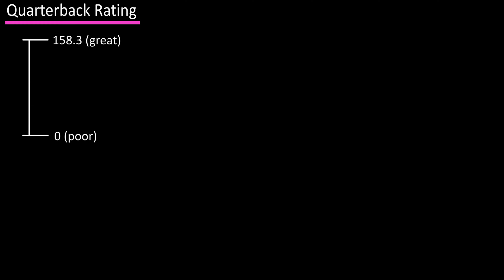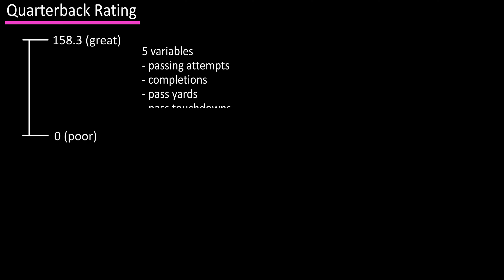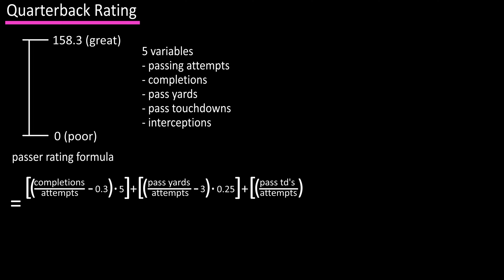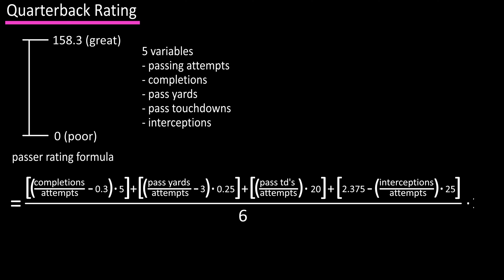Passer rating in the NFL is on a scale from 0 to 158.3, and the five variables it looks at are passing attempts, completions, passing yards, passing touchdowns, and interceptions thrown. The formula for passer rating equals: the quantity completions divided by attempts minus 0.3 times 5, plus the quantity passing yards divided by attempts minus 3 times 0.25, plus the quantity passing touchdowns divided by attempts times 20, plus the quantity 2.375 minus interceptions divided by attempts times 25. Take that result and divide it by 6, then multiply by 100.